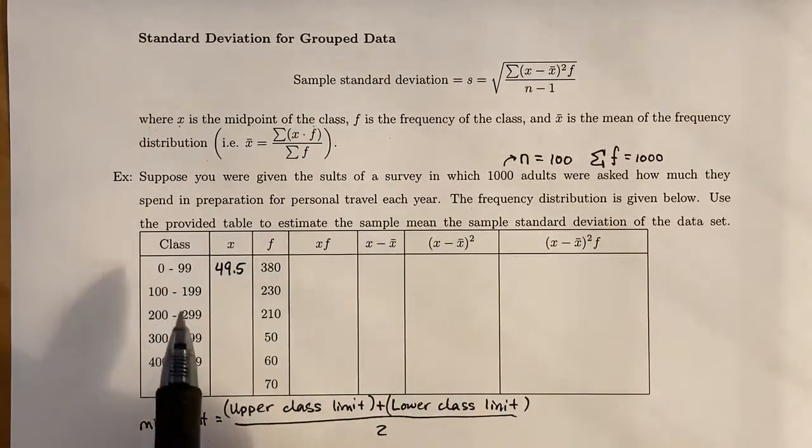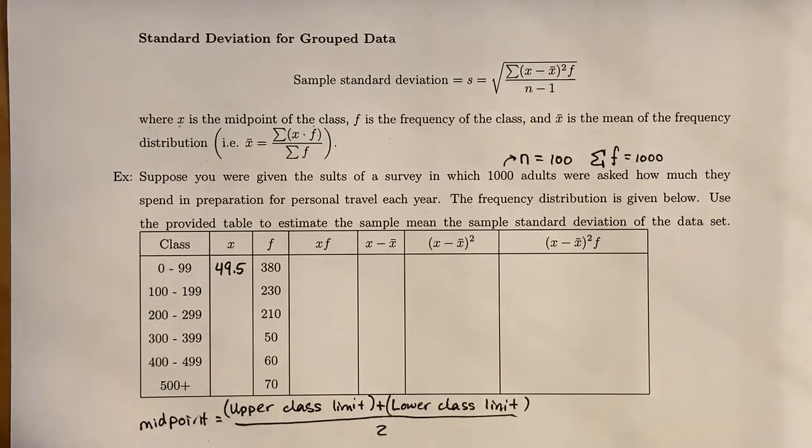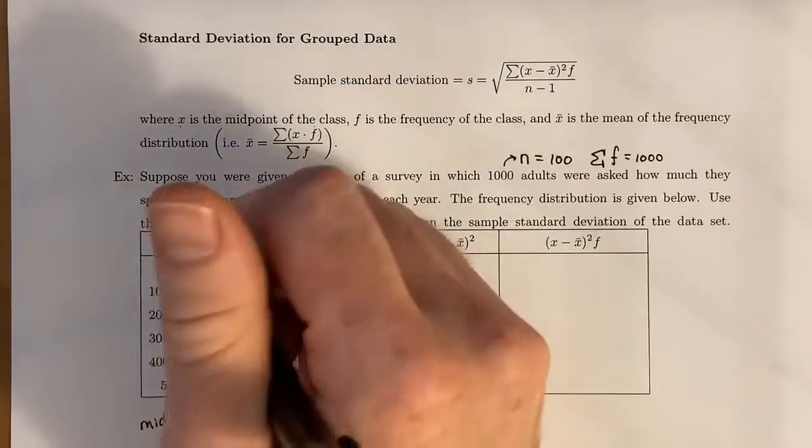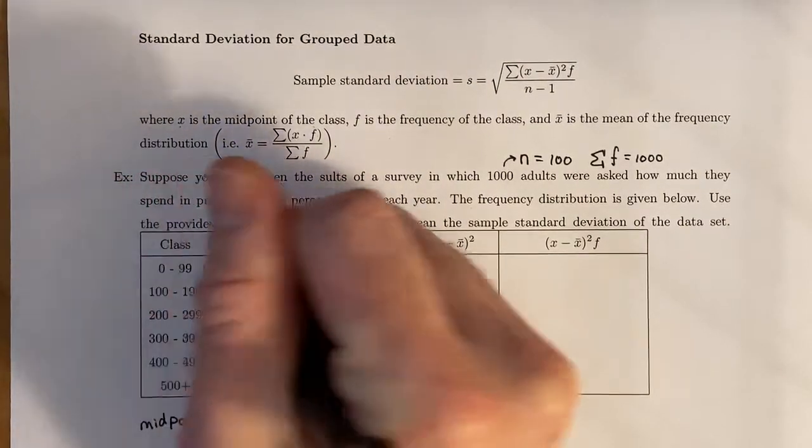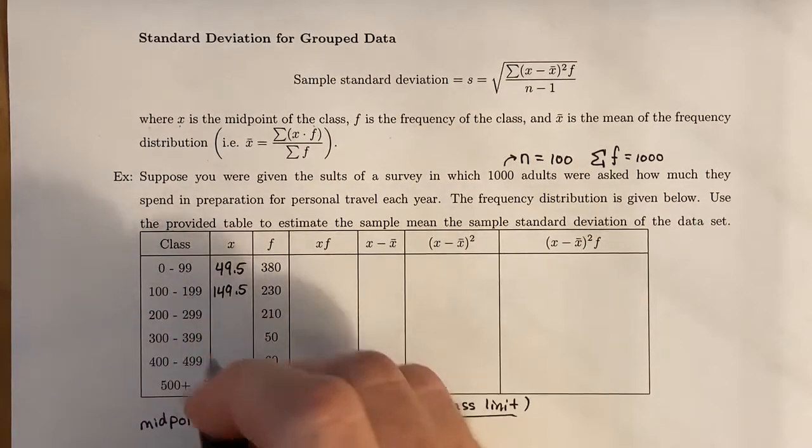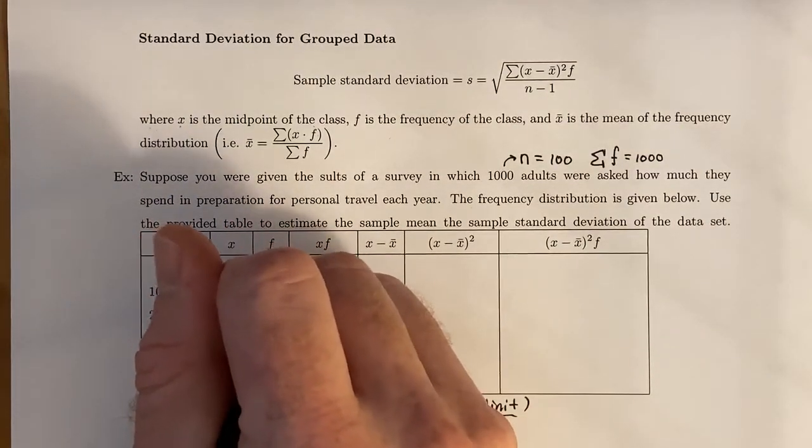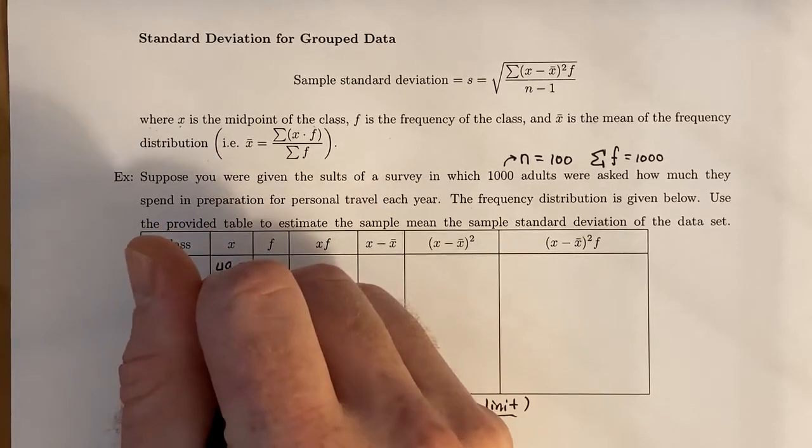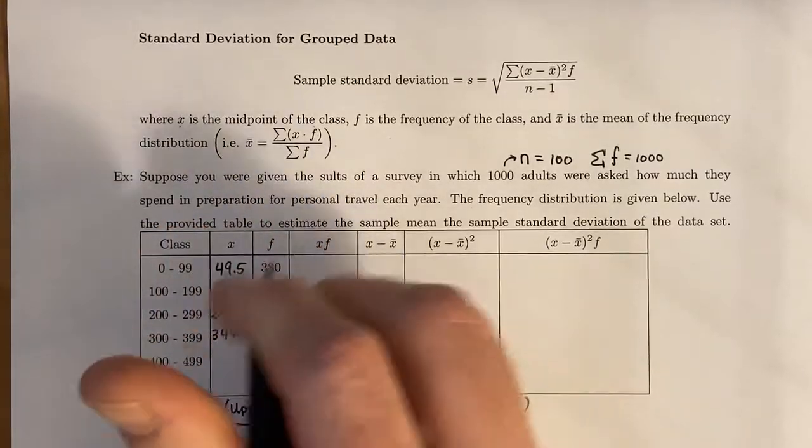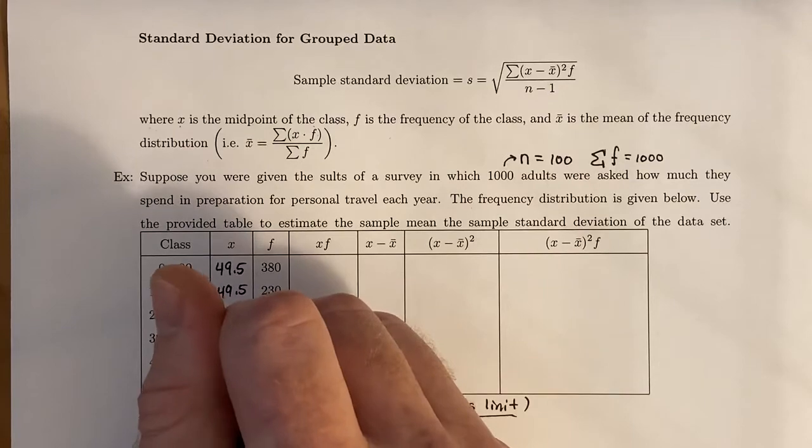Next, we take 199 plus 100, which gives us 299, and divide by 2, which gives 149.5. You do this all the way down. That's going to be 249.5, 349.5, 449.5.